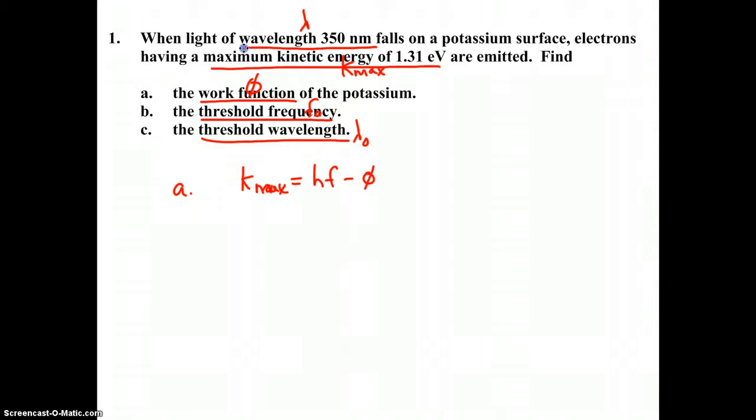We were given the wavelength of the incident light and not the frequency. A nice shortcut to keep in mind is to remember that this is light, which travels at the speed of light. From our wave equation, f equals c over lambda. So instead of hf, we can use hc over lambda minus phi, an alternate form of the photoelectric equation.